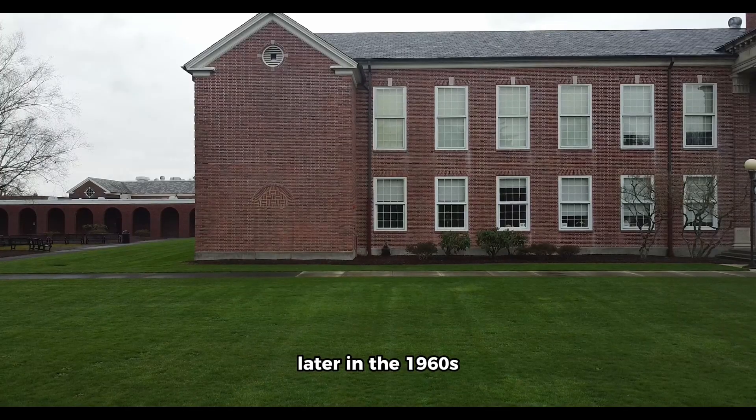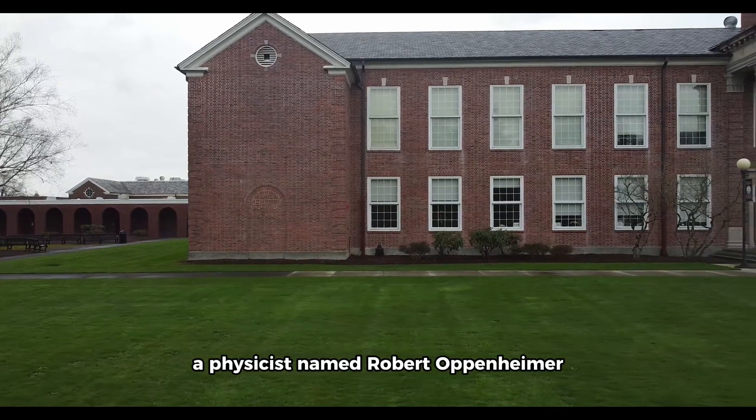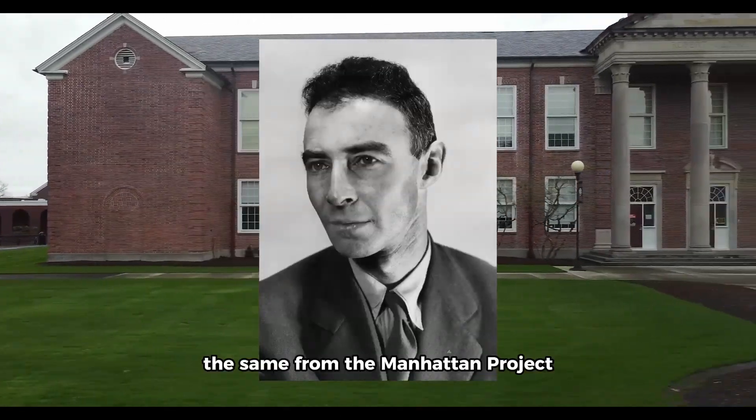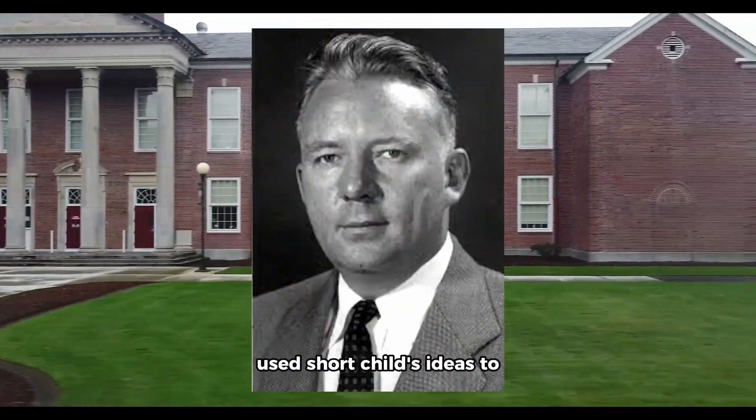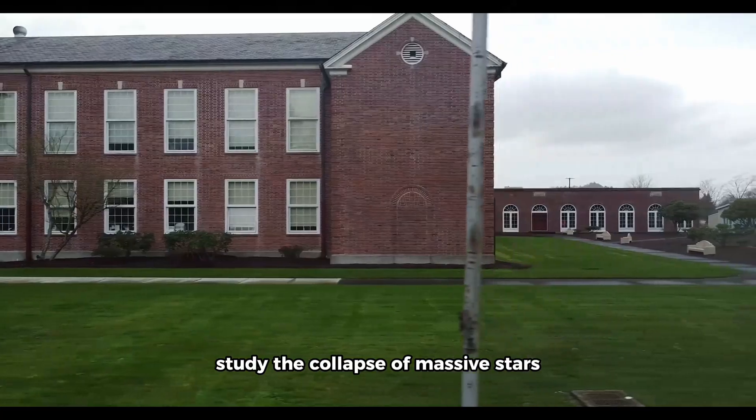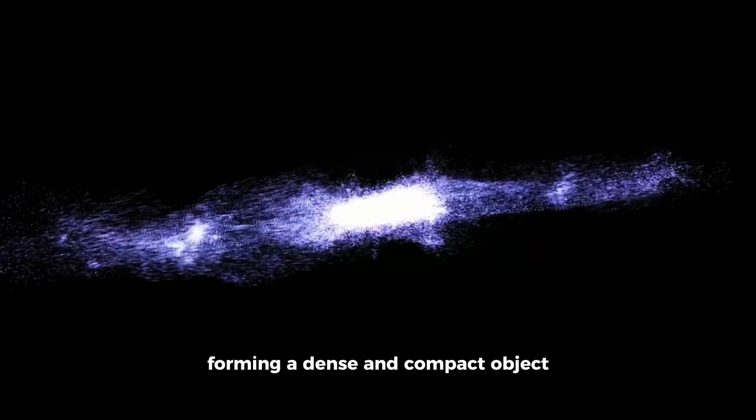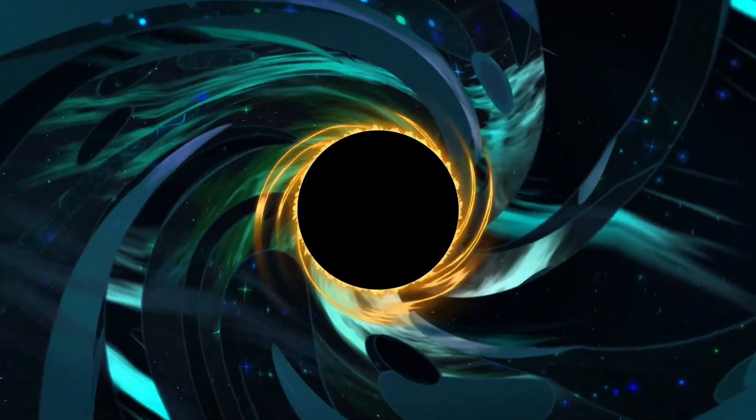Later, in the 1960s, a physicist named Robert Oppenheimer, the same from the Manhattan Project, and his colleague Hartland Schneider used Schwarzschild's ideas to study the collapse of massive stars. They discovered that a massive star at the end of its life could collapse, forming a dense and compact object: a black hole.